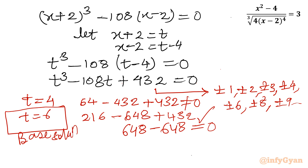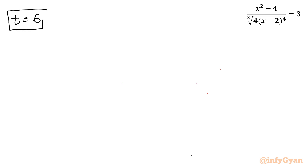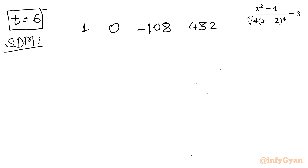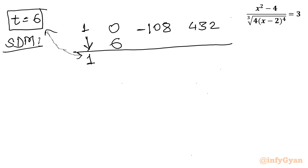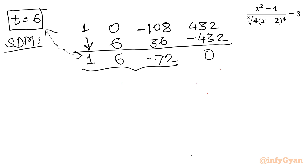Now I will write the coefficients of the cubic equation for synthetic division: 1, 0, -108, +432. Using base solution t = 6: bring down 1; 6×1 = 6; 6+0 = 6; 6×6 = 36; 36 + (-108) = -72; 6×(-72) = -432; -432 + 432 = 0. So the coefficients for the resulting quadratic are 1, 6, -72.